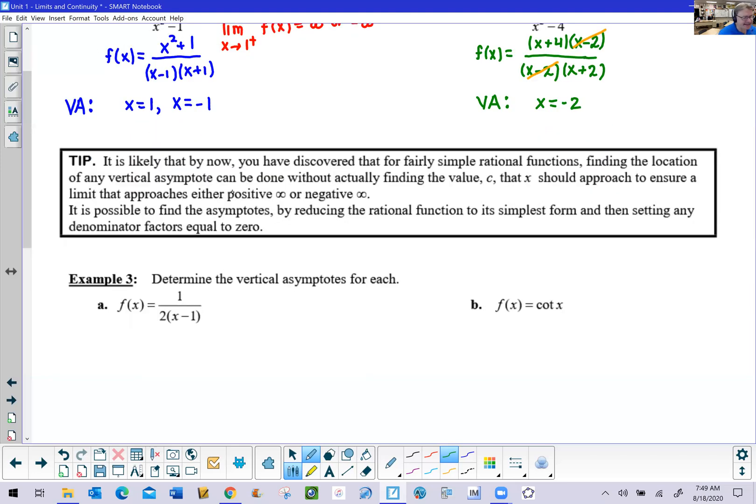For the tip in the box, it's likely that by now you've discovered that for fairly simple rational functions, finding the location of any vertical asymptote can be done without actually finding the value c that x would have to approach to ensure getting an infinity or negative infinity. So it's possible just to find those asymptotes by reducing the rational function to its simplest form and setting any denominator factors equal to zero. That's your really healthy tip to find vertical asymptotes.